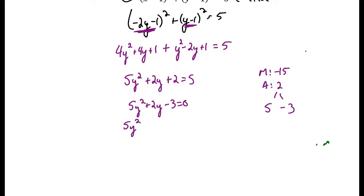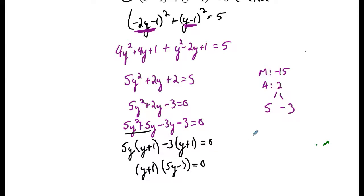So 5y squared plus 5y minus 3y minus 3 equals 0. When I group, I get 5y times y plus 1, minus 3 times y plus 1. So my factors are y plus 1 and 5y minus 3 equals 0, which gives me y values when I use the zero product property of y equals negative 1 and y equals 3 fifths.